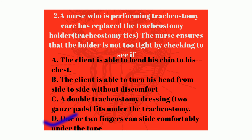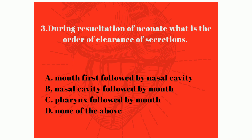The correct answer is option D: one or two fingers can slide comfortably under the tape. Recalling the principles of tracheostomy care, there should be enough room for one or two fingers to slide comfortably under the tracheostomy tape. This ensures the tape is tight enough to prevent tracheostomy dislocation while also preventing excessive constriction around the neck.